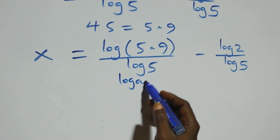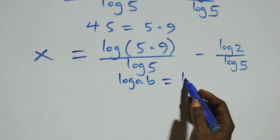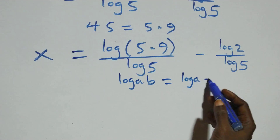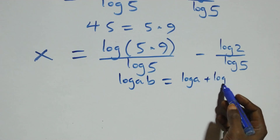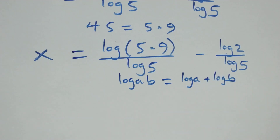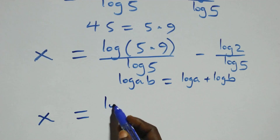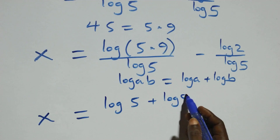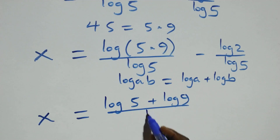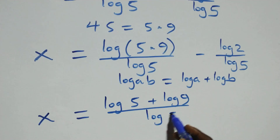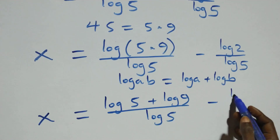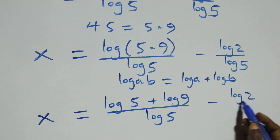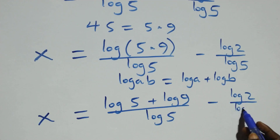This follows the log product rule: log(a times b) equals log a plus log b. So we have x equals log 5 plus log 9, all over log 5, minus log 2 over log 5.